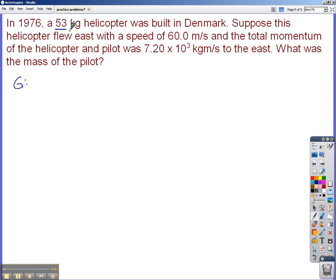First thing we see is the mass of the helicopter. So I'm going to call that mass of H. H for helicopter is 53 kilograms. And then this helicopter flew east with a speed of 60 meters per second. So the velocity of the helicopter is 60.0 meters per second.